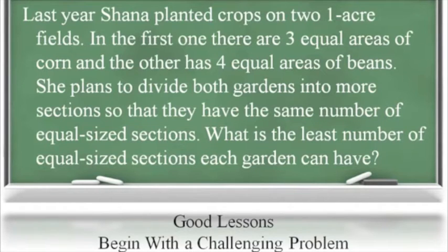In the first one, there are three equal areas of corn and the other has four equal areas of beans. She plans to divide both gardens into more sections so that they have the same number of equal-sized sections. What is the least number of equal-sized sections each garden can have?